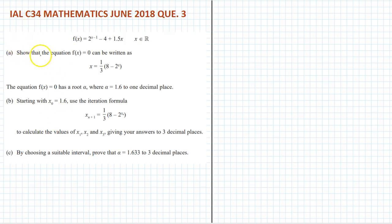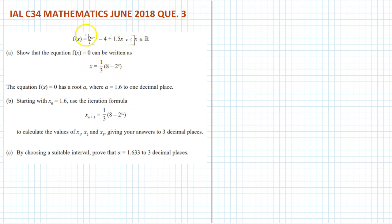Question number 3. Show that the equation f(x) equals zero. So this equation is equal to zero, and this portion can be written differently — we have to make x the subject so that 2 to the power x remains in the equation. So our equation is as follows.